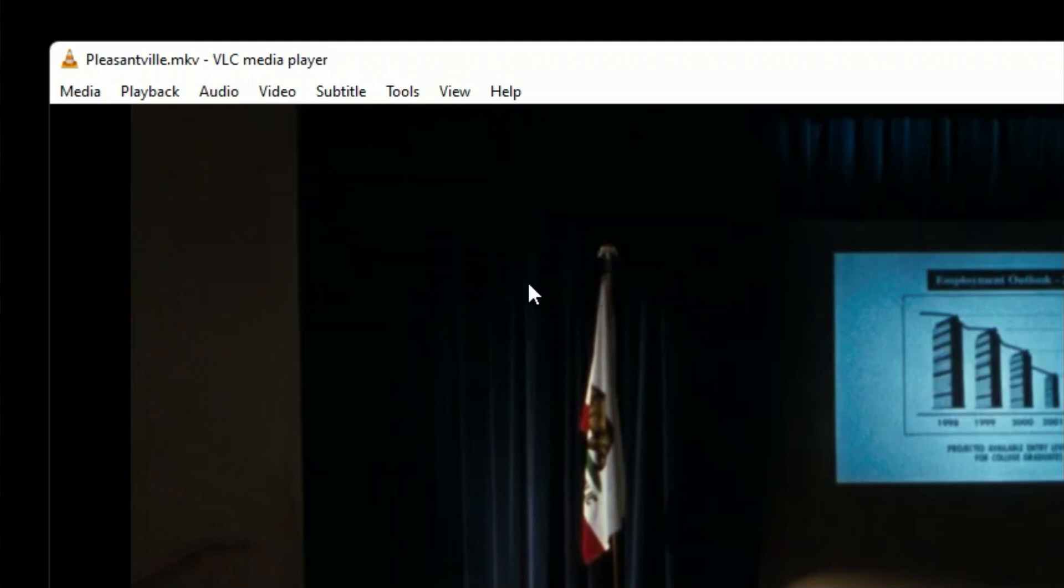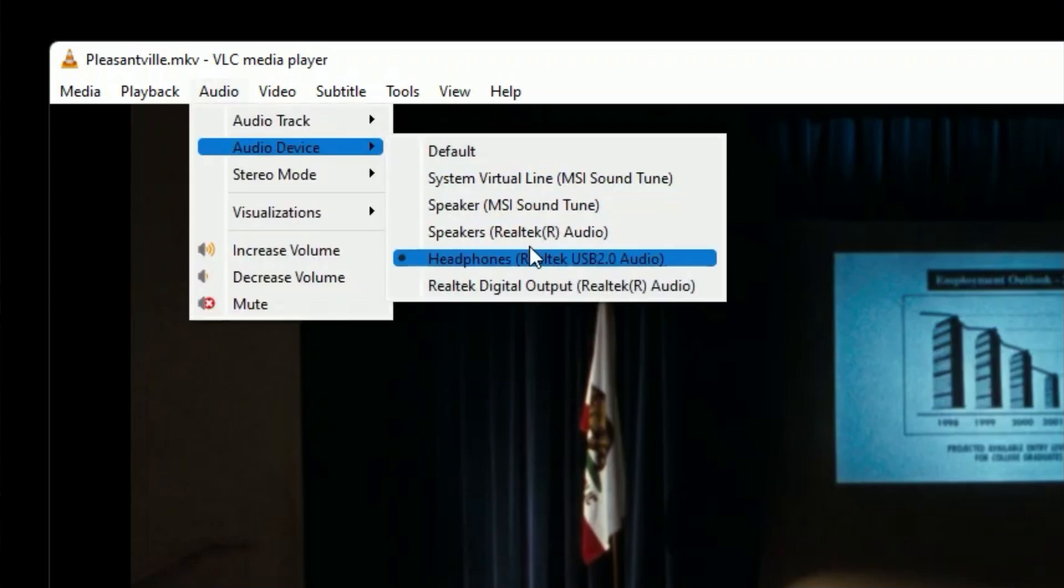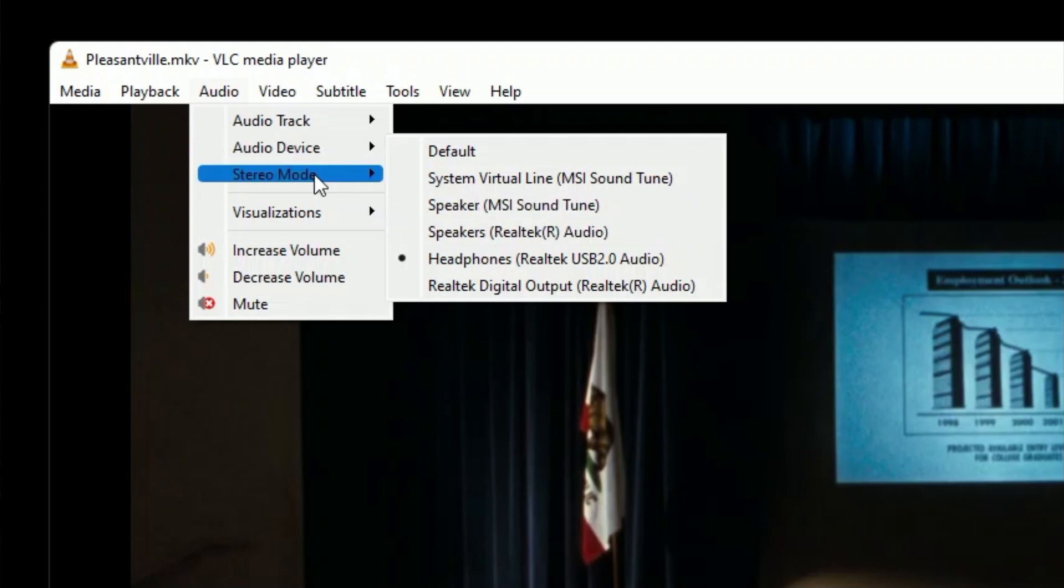Select that and then the second thing you want to do, now you can see that I've actually selected that output. The second thing you want to do is go to the stereo mode and it may actually be on, it may be on mono, maybe on original stereo, whatever. Generally mine is on headphones and I simply change it to stereo.